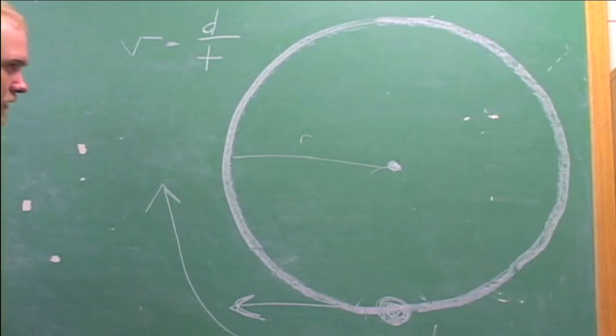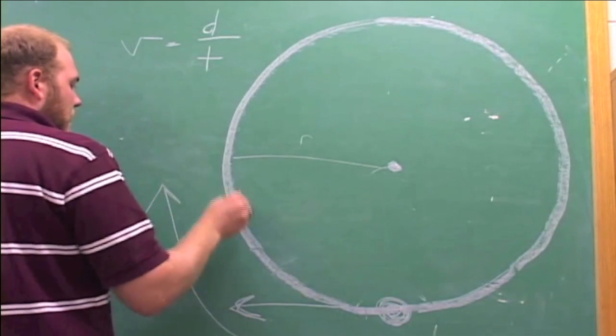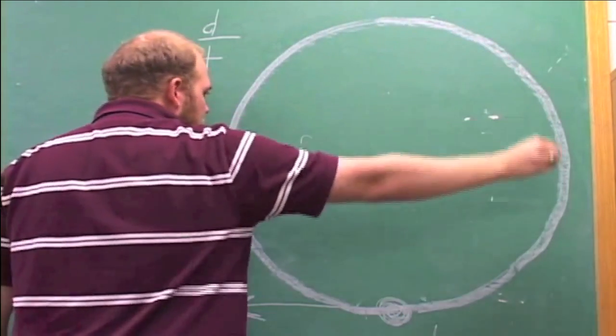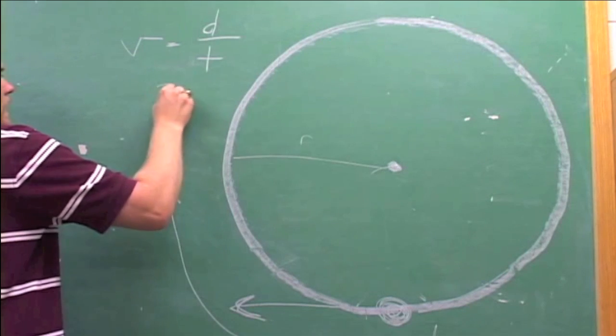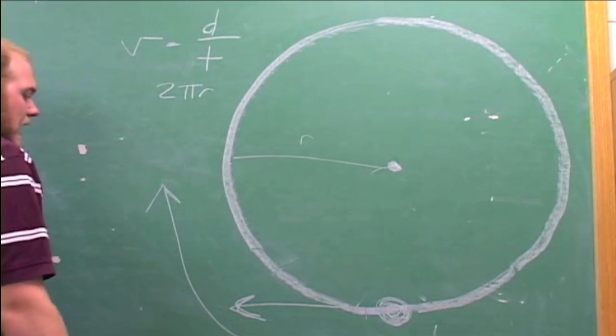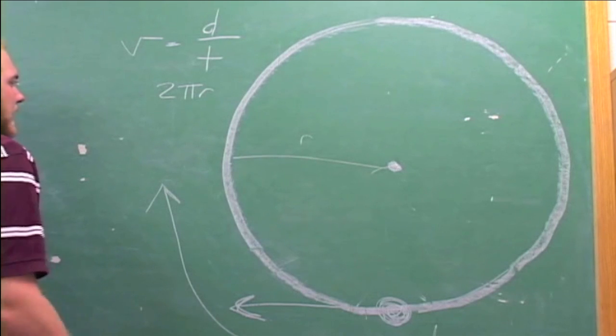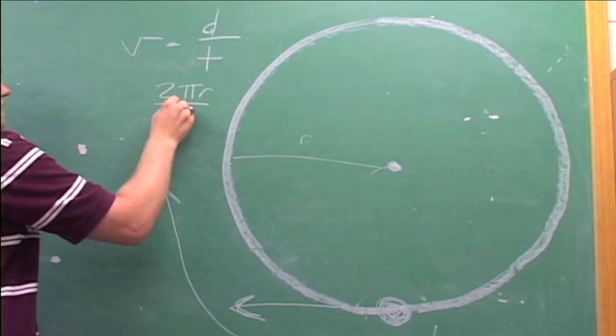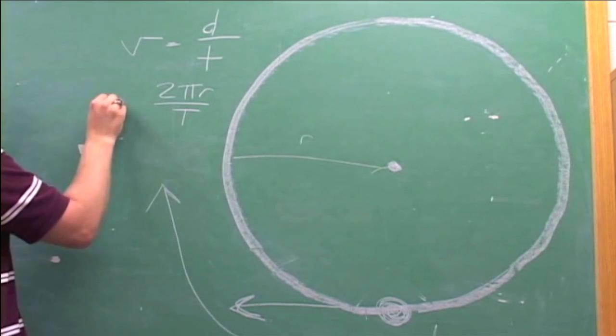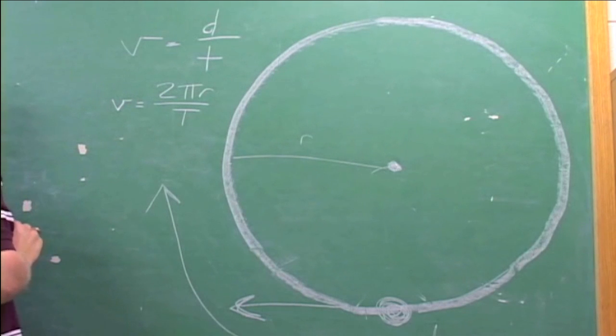Let's look at one rotation of the centrifuge. The distance that the point mass has to travel is equal to the circumference of the circle here. That's equal to 2 times pi times the radius. The time that it takes the point mass to travel around the circle is called the period. It's indicated by the letter t. So, the instantaneous velocity of our point mass is equal to 2 times pi times r divided by the period.